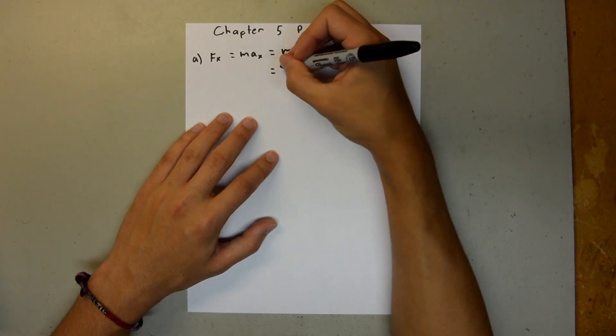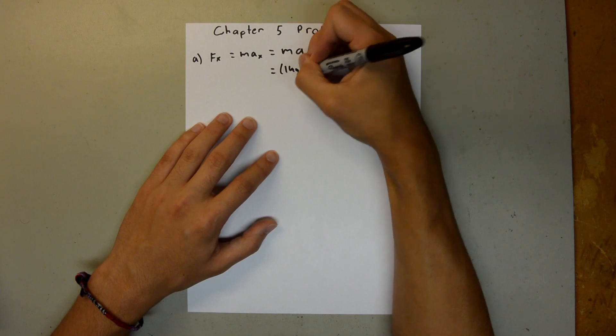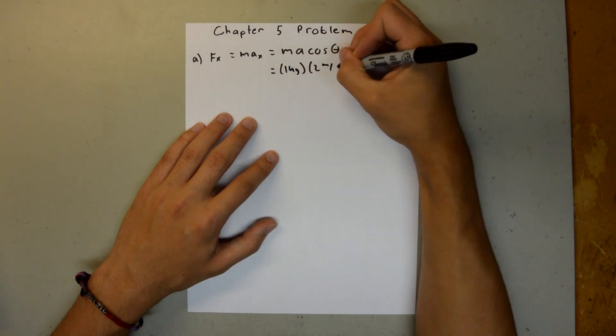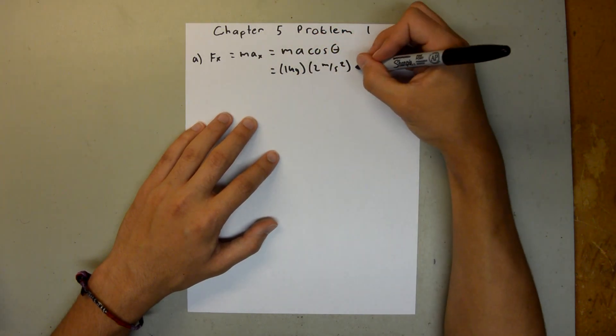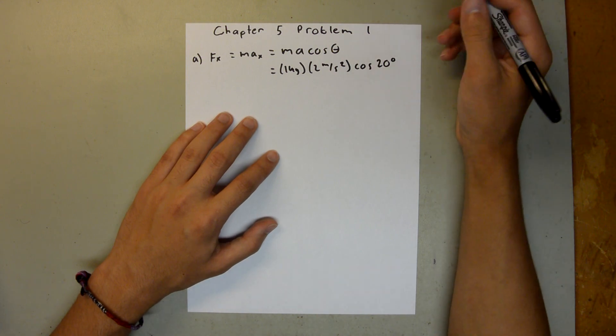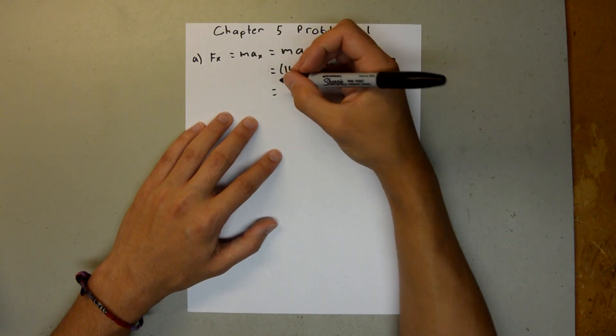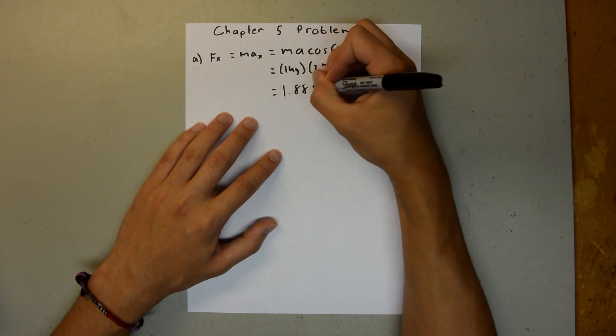We have all those values, so we can just plug them in: 1 kilogram, 2 meters per second squared, and cosine of 20 degrees. When you plug all that into your calculator, you should get 1.88 newtons.